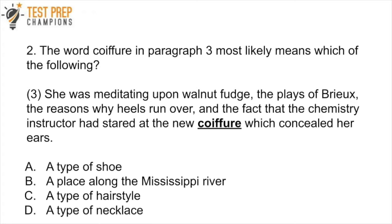To figure this out, you have to reason your way through it, and process of elimination is helpful. The main clue in the text is that the coiffure is concealing her ears. A shoe is not going to conceal her ears, and it's clearly not talking about a place along the Mississippi River. A necklace could perhaps conceal the ears, but most likely a necklace is not going to do that. So that leaves us with C, a type of hairstyle, which is the correct answer.